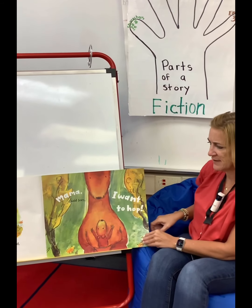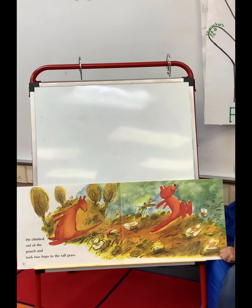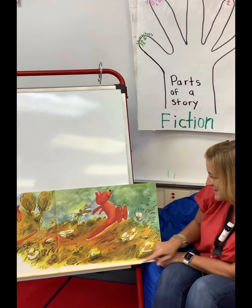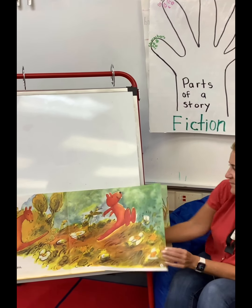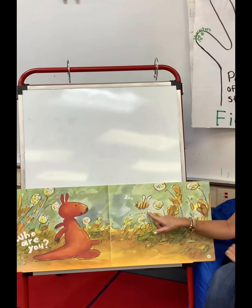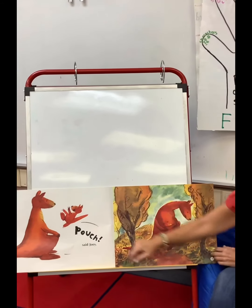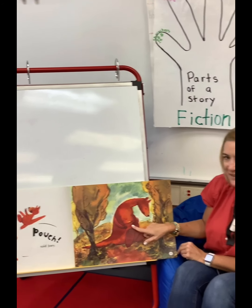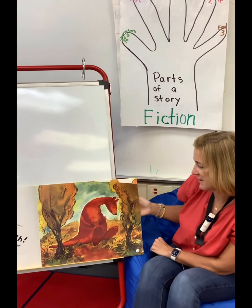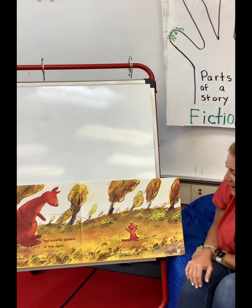Mama said, 'Joey, I want to hop.' He climbed out of the pouch and took two hops in the tall grass. Hop, hop. 'Who are you?' 'Bee?' 'Pouch!' said Joey, and he hopped back into his mama's pouch. I think he was scared of the bee.